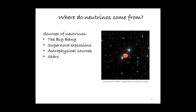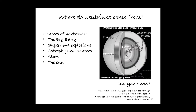Neutrinos are also produced in stars. Stars are basically giant nuclear reactors, and we know that nuclear decays and nuclear reactions produce neutrinos and anti-neutrinos. Our closest star is the Sun, so neutrinos are produced in high abundance in the Sun. In fact, our Sun produces enough neutrinos that about 65 billion neutrinos pass through your thumbnail every second.